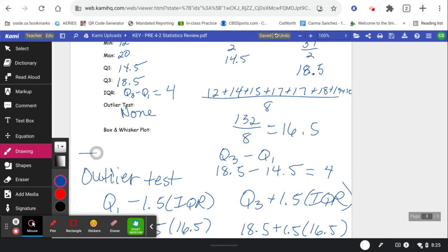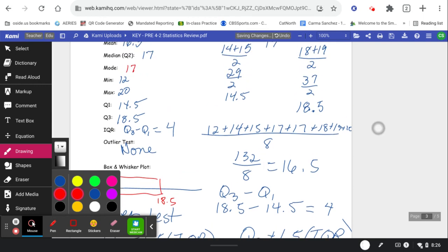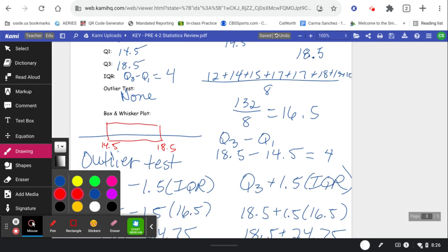Last, we draw the box and whisker plot. We start the box at our Q1, 14.5. We end our box at 18.5. Connect that box. And then our median of this data was 17. So that's going to be a little bit closer to here. So then call that the Q2, call this the Q3, call this the Q1. There's my box of the box and whisker.